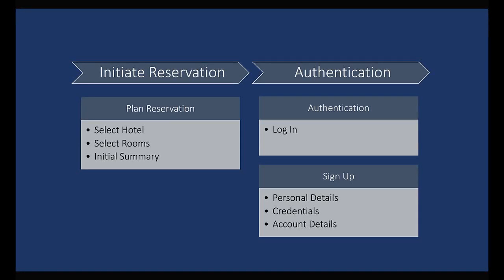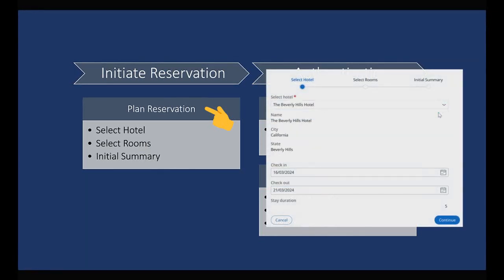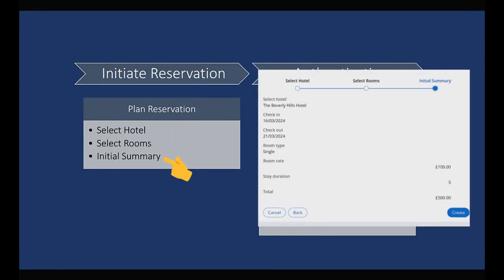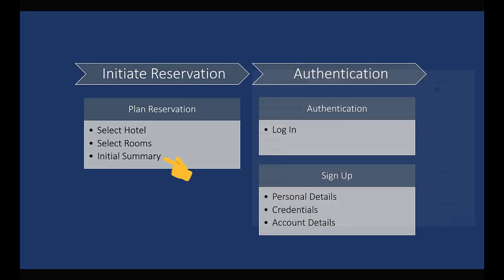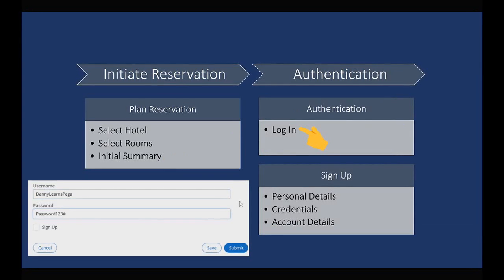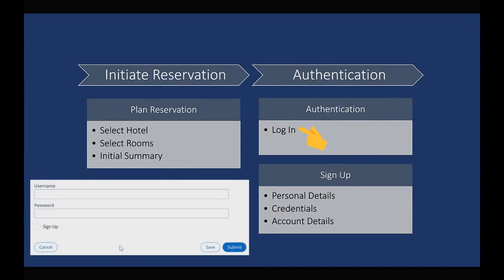Let's remember where we are. We have two stages: initiate, reservation, and authentication. In the first stage we have one process, plan reservation, which consists of three steps: select to tell, select rooms, and show the initial summary to the user. After this we want the user to authenticate, so in the first process of the second stage we have a login screen. If the user has credentials, they will enter them and proceed to the next stage.